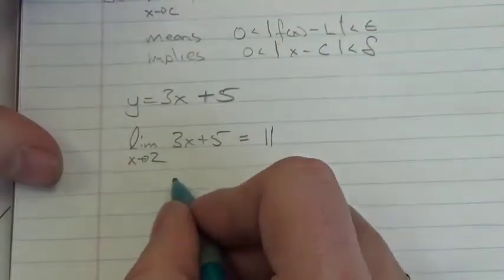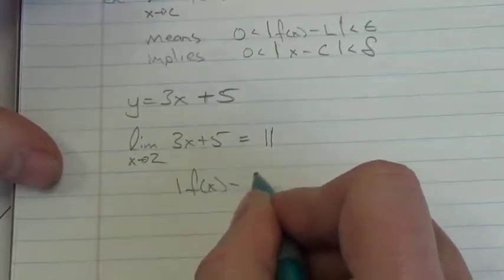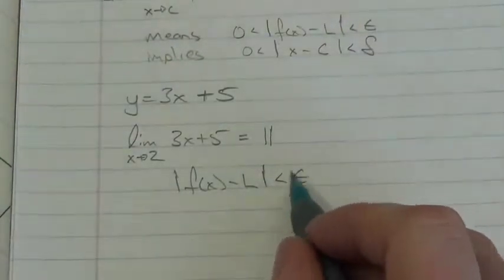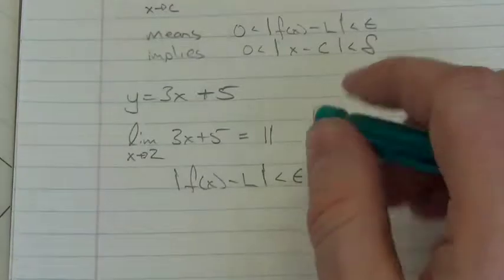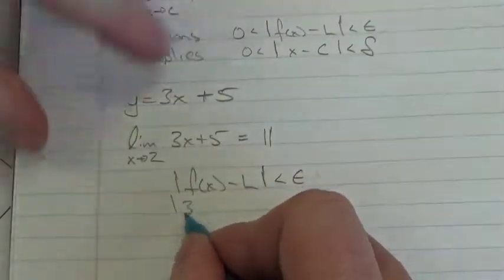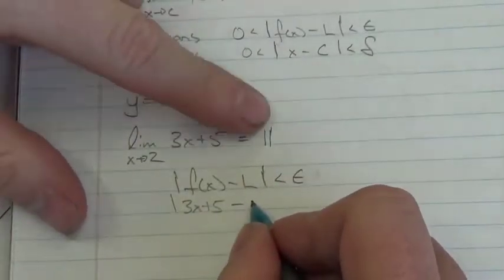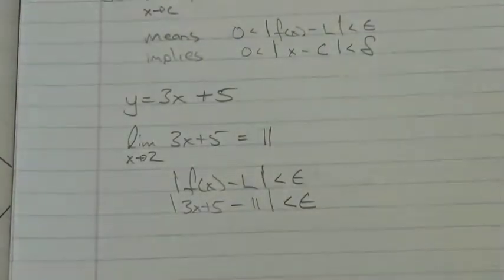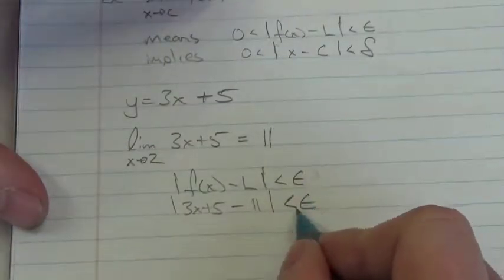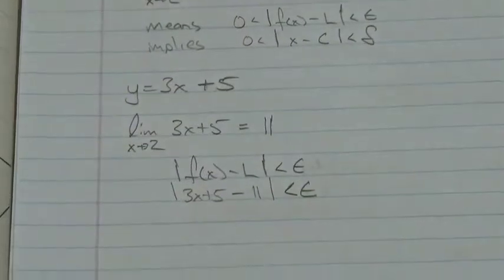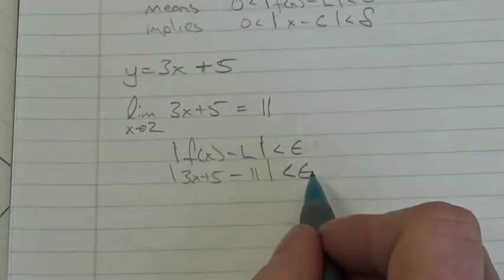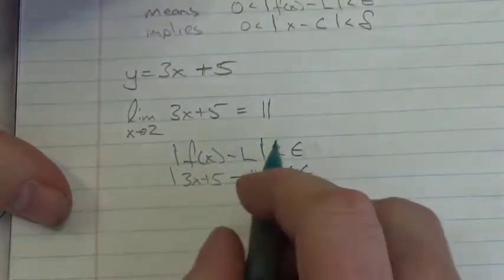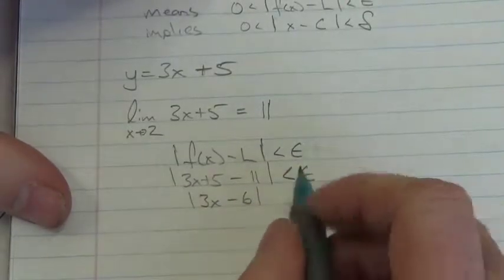I'm going to use epsilon-delta notation to verify that 11 is in fact the limit. I'll look at the absolute value of my function minus my proposed limit: the absolute value of 3X plus 5 minus 11, and show that's less than epsilon. That simplifies down to 3X minus 6, still less than epsilon.